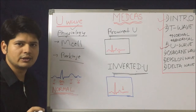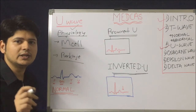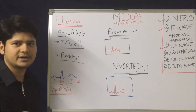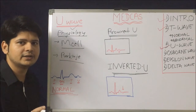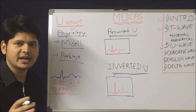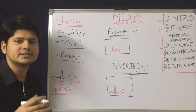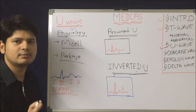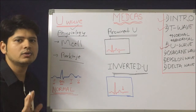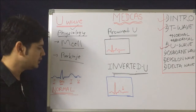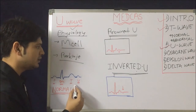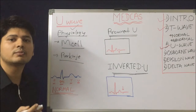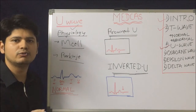The amplitude of the U wave is inversely proportional to heart rate. So we can understand that when there is bradycardia, it is more likely we will see the U wave. Now let us understand what are the abnormalities of the U wave.